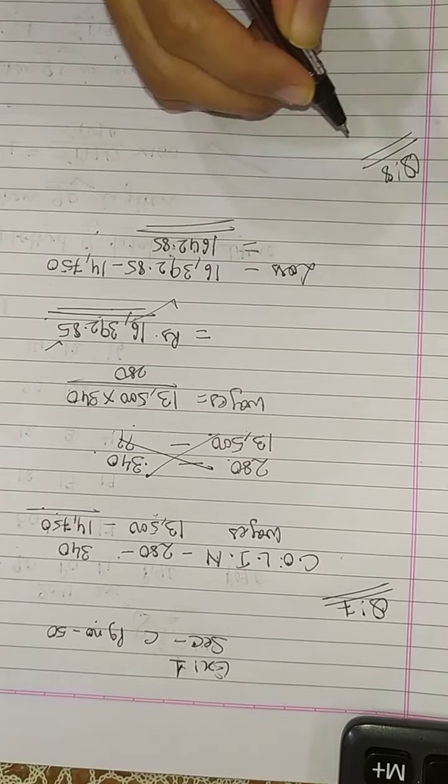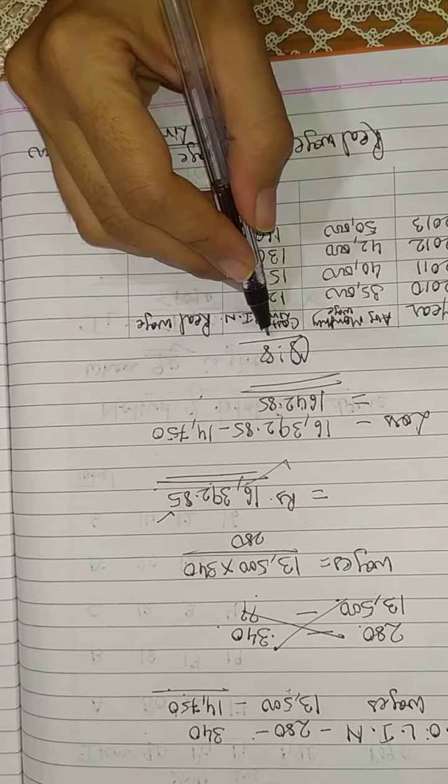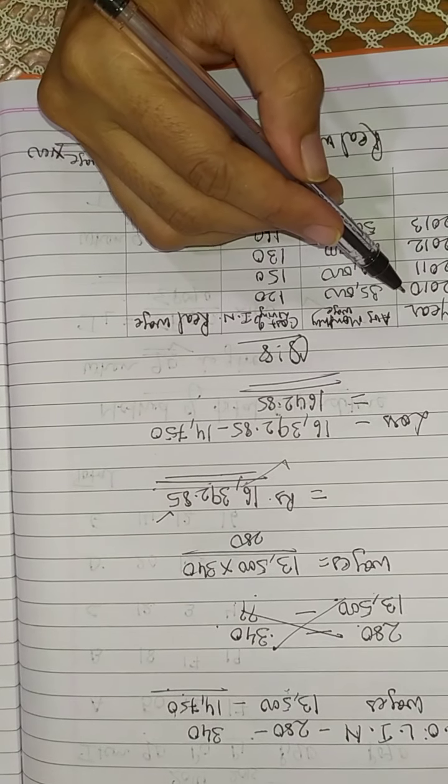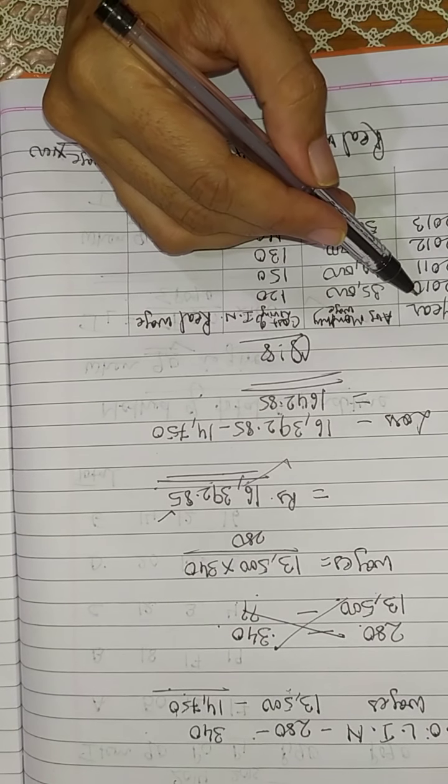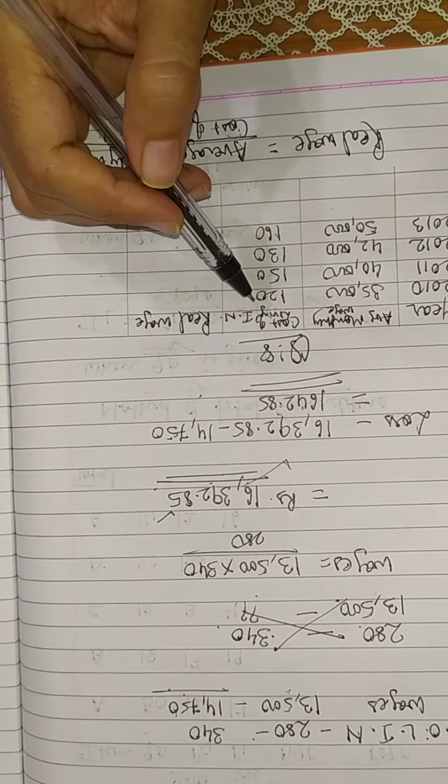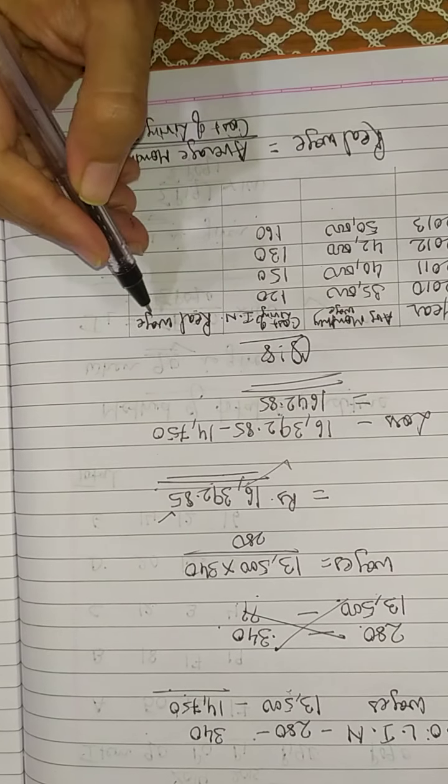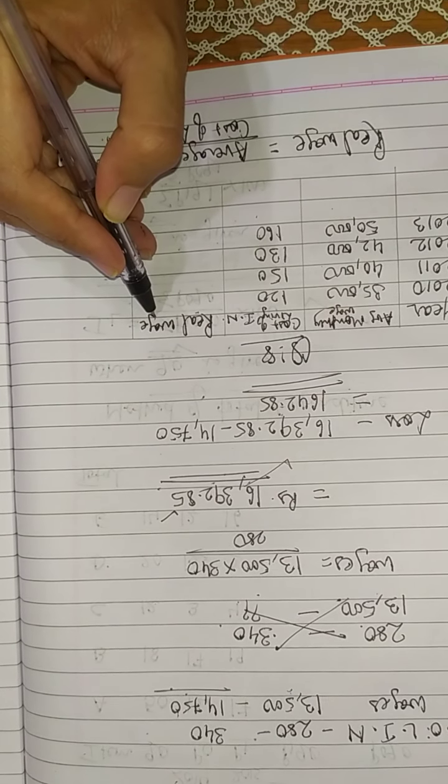Now question number 8. In question number 8, the information is given. Year is given, average monthly wage is given, cost of living index number is given, and the question is you have to find the real wage. This is the question.